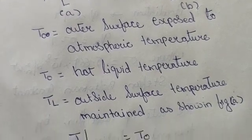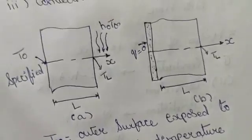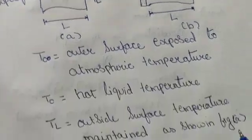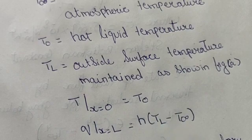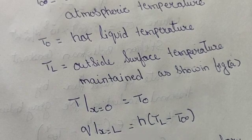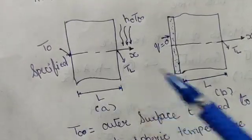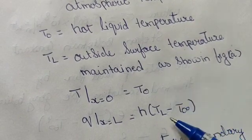The boundary conditions are: at x equals zero, T(x=0) equals T₀, which is the specified temperature. At x equals L, the heat flux condition is: h multiplied by (T_L minus T∞). These are the two boundary conditions for this case.